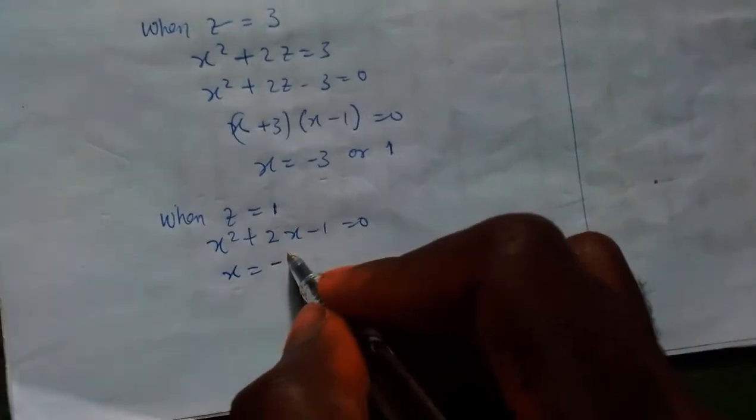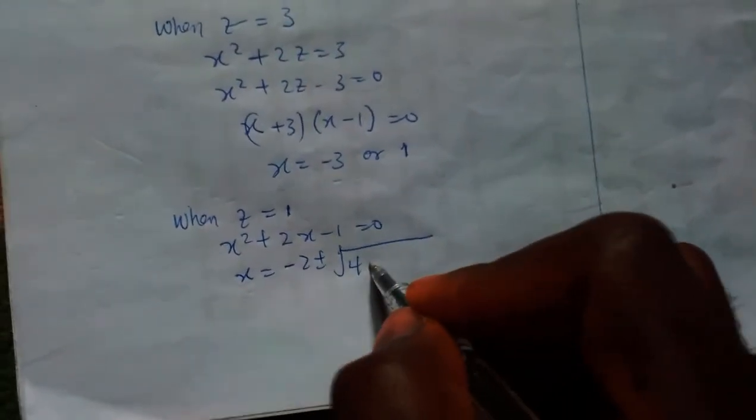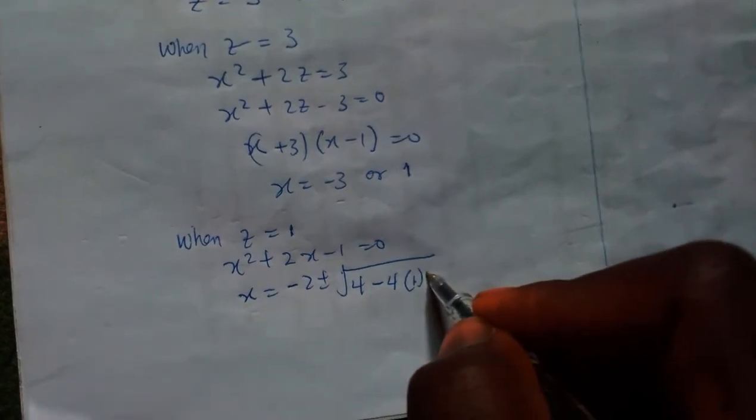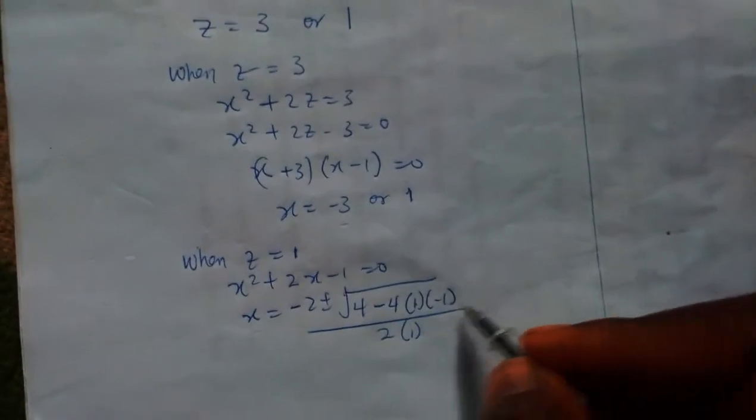I'm going to have it as minus 2 plus or minus square root of 4 minus 4ac, which is 1 times minus 1, over 2 times 1.